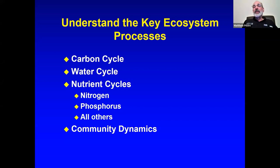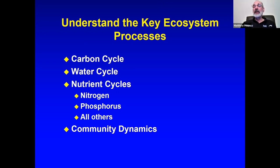We need to think about the big-scale ecosystem processes at work in your pasture. We have nutrient cycles: the carbon cycle, the water cycle, and all the nutrient cycles including nitrogen and phosphorus. These are truly cycles — nutrients go into the animals, come back out, go into the soil, come back to the plants. And then there's community dynamics — how all those various communities of organisms fit together and impact each other.